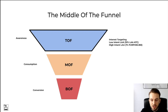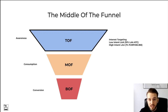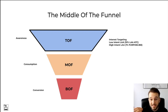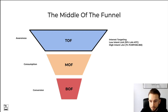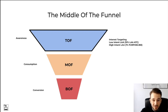For top-of-funnel ad sets, I usually go for interest targeting to start, then set up high-intent lookalike audiences. For example, from people that have purchased previously, I create a 1% lookalike audience and upload that into the top of the funnel — despite being a lookalike, these people haven't yet heard of the brand. Some people also test broader lookalike audiences, like a 10% lookalike of those that have added to cart. I usually stick to interests until I have a purchase list large enough to run as a 1% lookalike audience.